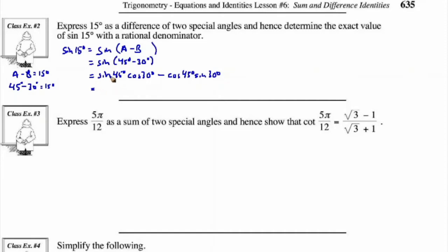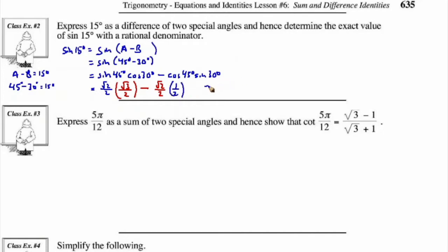What is sine of 45 degrees? That's root 2 over 2. Then we have cos of 30 degrees, which is root 3 over 2. And then subtract cos of 45 degrees — that's root 2 over 2 — times sine of 30 degrees. The sine of 30 degrees is the y-value for the shortest angle, so that's one half.